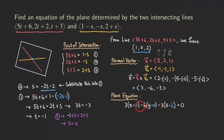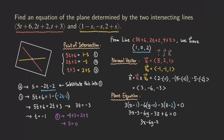Distributing, we get 3x − 3 − 6y − 3z + 6 = 0. Combining constants: 3x − 6y − 3z + 3 = 0, so 3x − 6y − 3z = −3. Dividing everything by 3 gives the simplified form: x − 2y − z = −1. This is the final simplified answer.